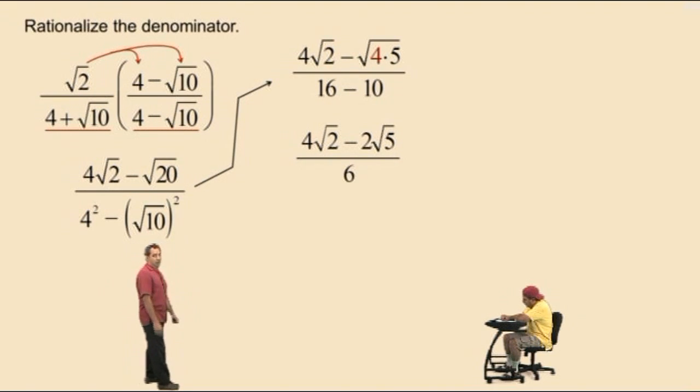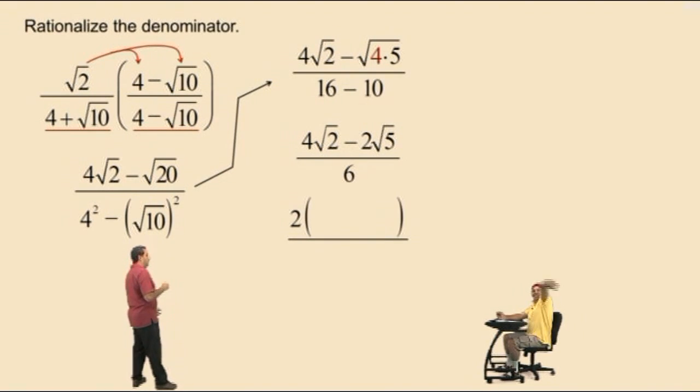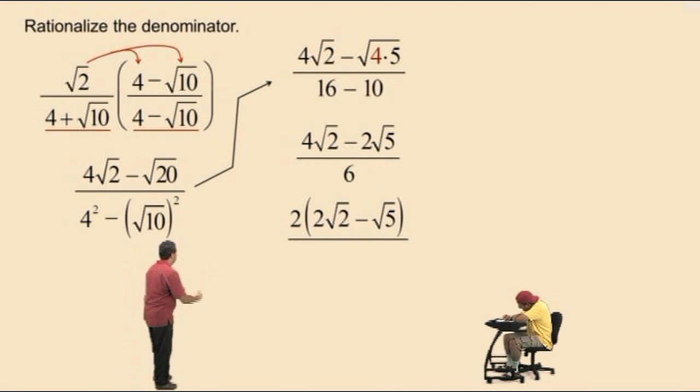Now we're not done because that numerator there has a greatest common factor. Now Charlie, what is the greatest common factor of that numerator? 2. That's right. And now when you factor out the 2, you're left with 2 square roots of 2 subtract the square root of 5. Let's bring down the 6.